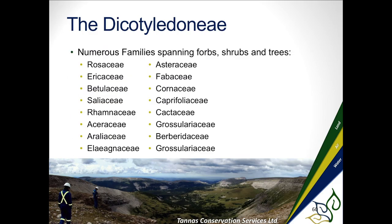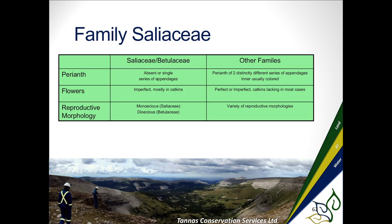Now jumping into dicots. There are a lot of different dicots, and we'll be working with Salicaceae — poplars and willows. Poplar is very similar to willows and they cross as much as willows do. Aspen, balsam, cottonwoods all cross with each other, especially the cottonwoods. Flowers are imperfect and in catkins, with male-female separation. The reproductive morphology is monoecious in Salicaceae.